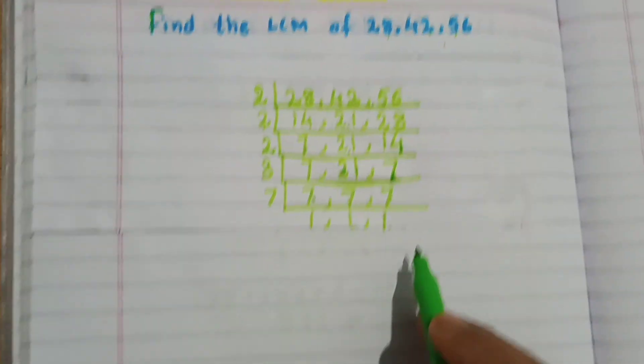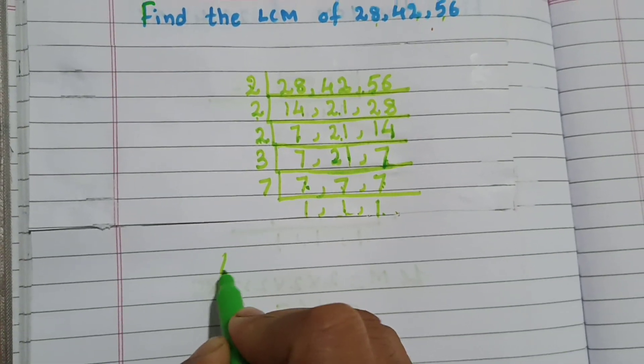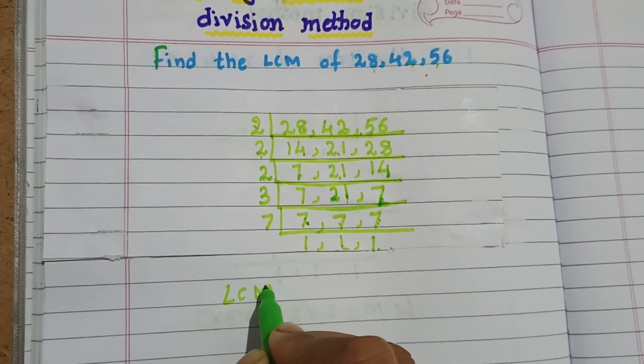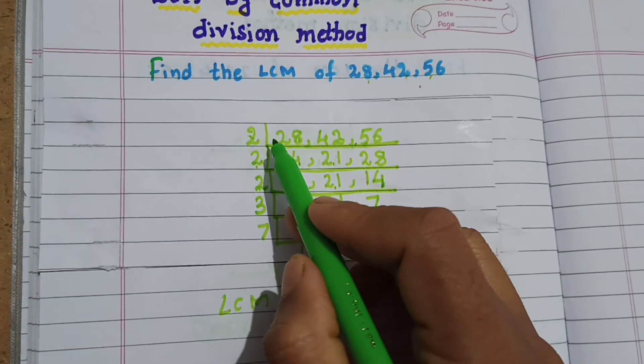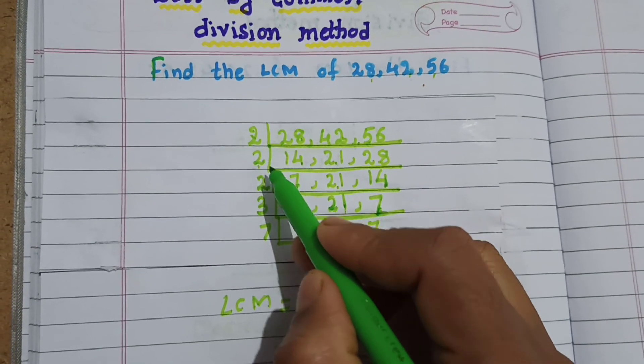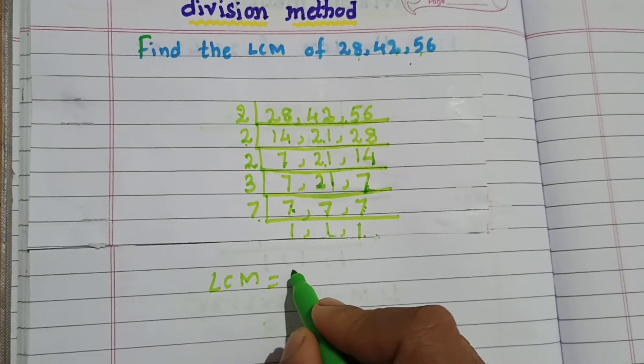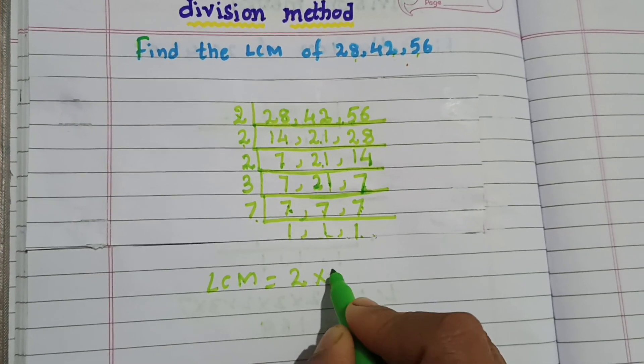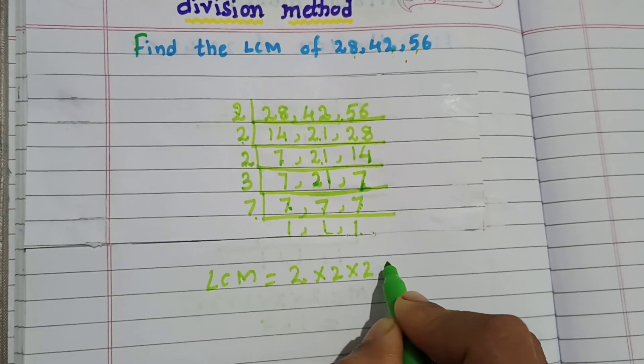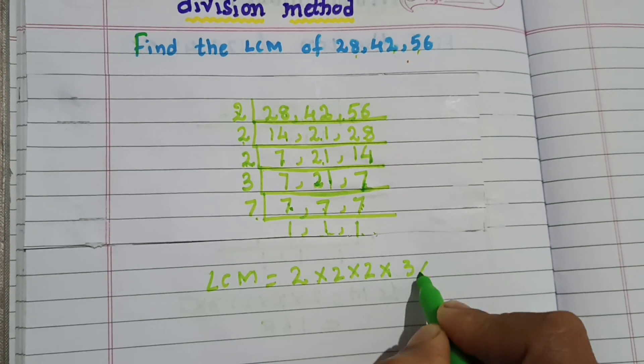Now, LCM. LCM is the product of the divisors. What are the divisors here? 2, 2, 2, 3, 7. The LCM is equal to the product of divisors: 2 into 2 into 2 into 3 into 7.